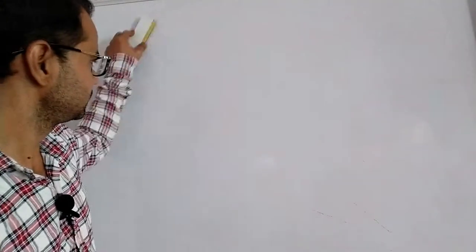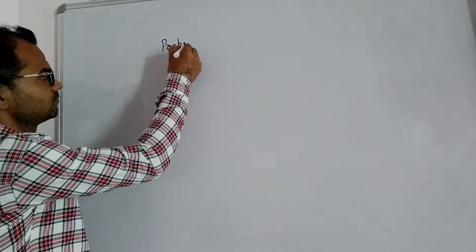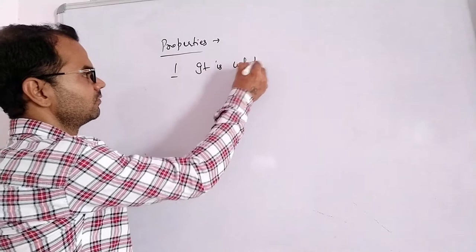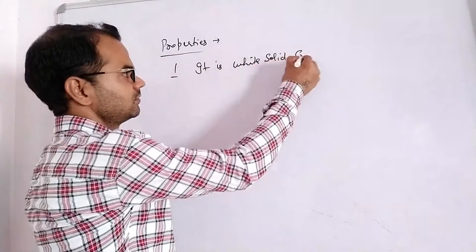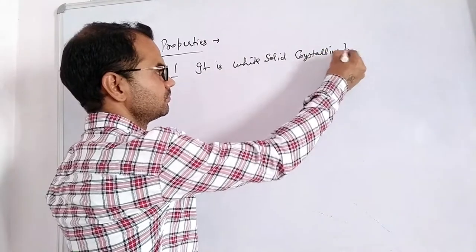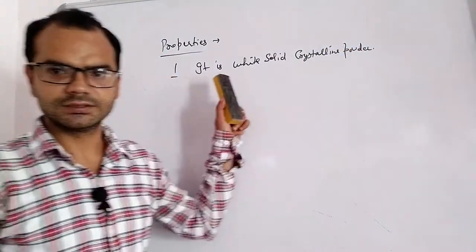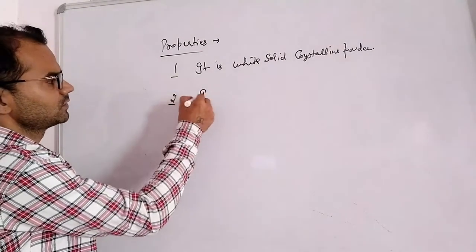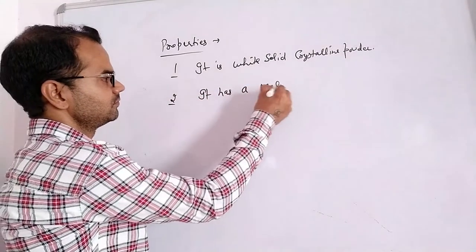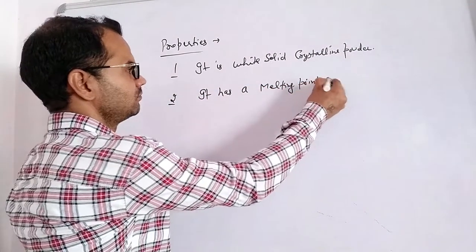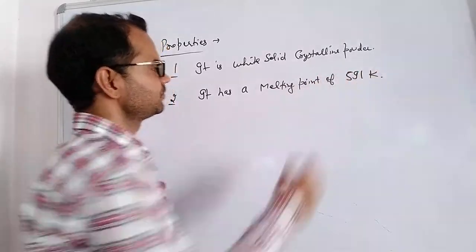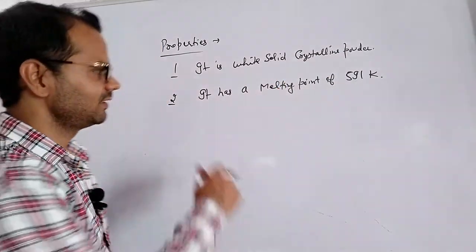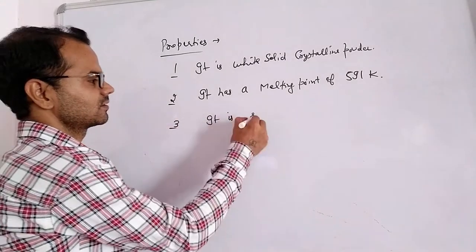Now the properties of caustic soda. First, it is a white solid crystalline powder. Second, it has a melting point of 591 Kelvin. Third, it is a stable compound.